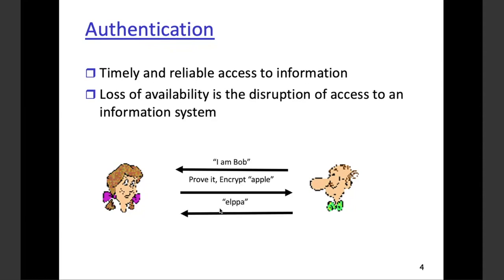Alice says 'Yes, hi Bob, I authenticate you — you are the right person, you know the answer.' For example, when we log into any email system, any social media, or even an organization system, how do we get authenticated? Because there are credentials that have been given to us.